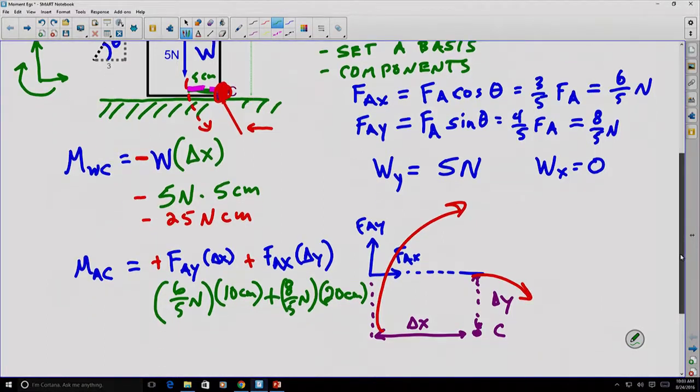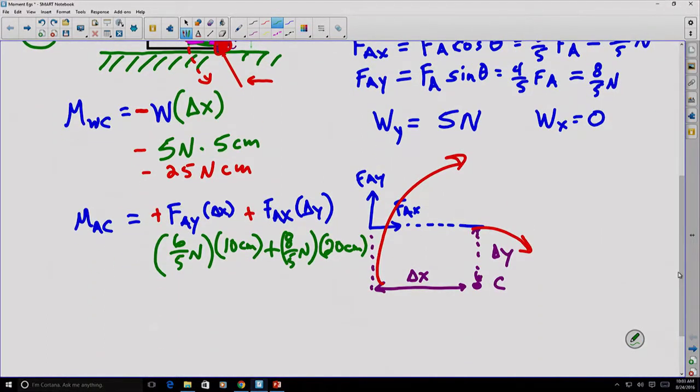Well, if we do these calculations, we get 12 Newton centimeters plus 32 Newton centimeters for a total of 44 Newton centimeters in the positive direction.